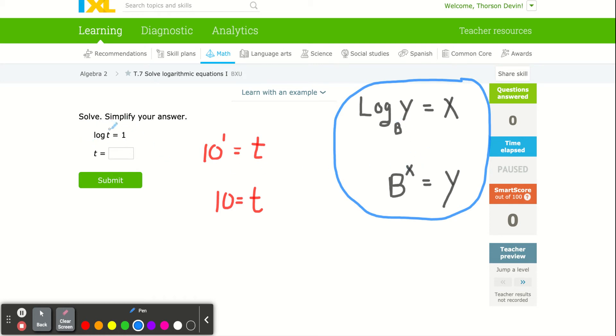When we solve these equations, we just rewrite them. This is a common log. If you don't see a base, it's base 10. So 10 raised to this exponent equals the t variable inside. 10 to the 1 power is 10, so your answer is 10.